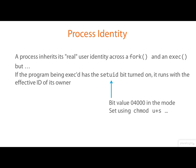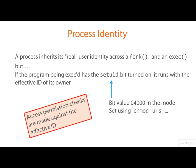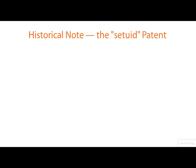The set user ID bit has the value 4000 octal in the file's mode, and you can set it with the chmod command as shown here. To repeat the point: if the program being exec'd has the set user ID bit turned on, it runs with the effective ID of its owner. The point being that access permission checks are made against the effective ID.